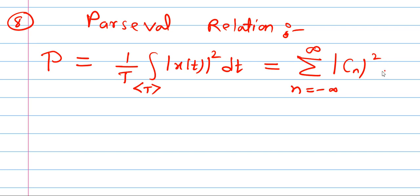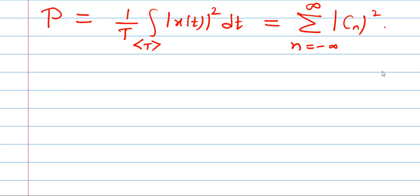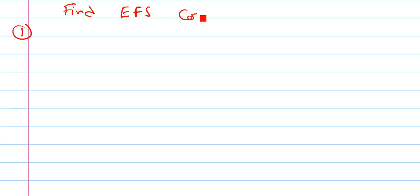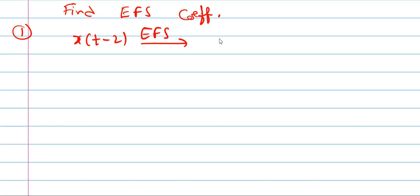Those are the eight properties. You can pause the video and review them before solving problems. Question number 1: find the exponential Fourier series coefficient for X of t minus 2. The answer is e raised to the power of minus 2j-n-omega-0 times Cn — a shift in the time domain means same sign on both sides, so minus 2 here and minus 2 there.